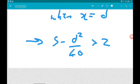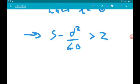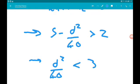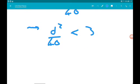So we need 5 minus d squared over 40 to be greater than 2. So if we add the fraction and subtract 2, we get that d squared over 40 is less than 3.